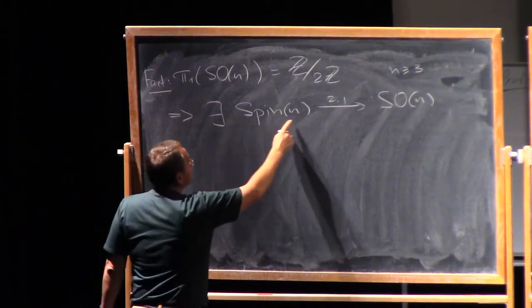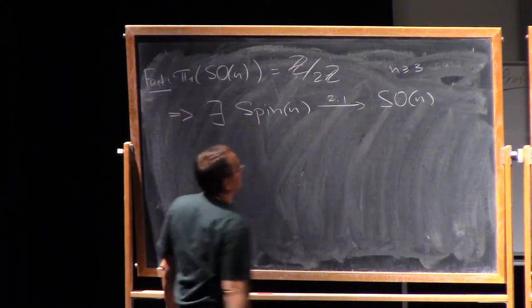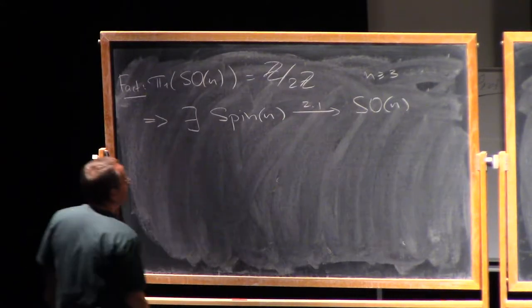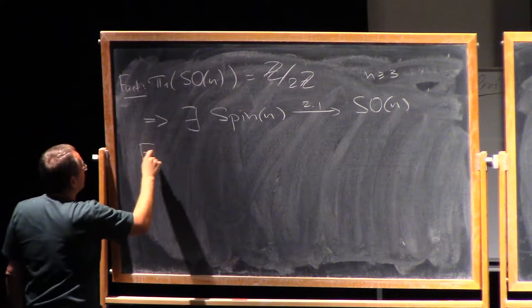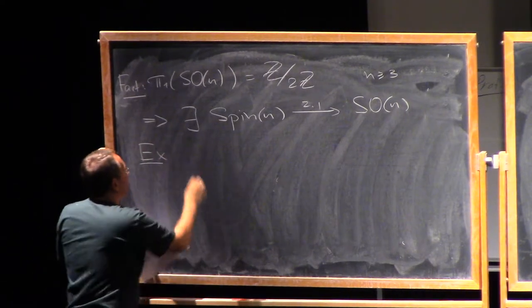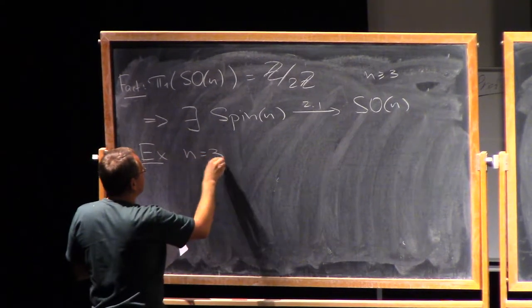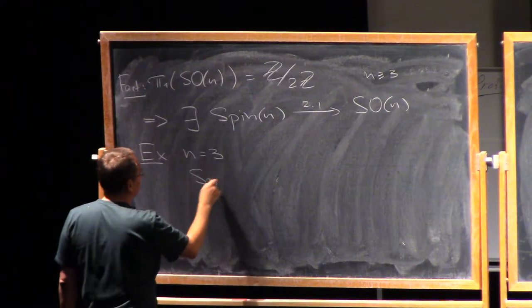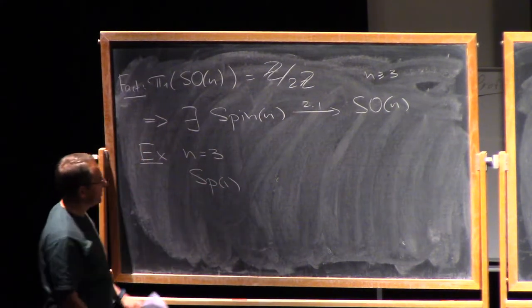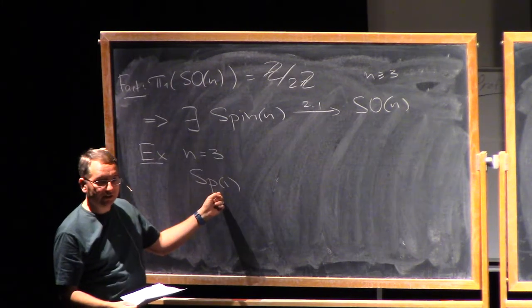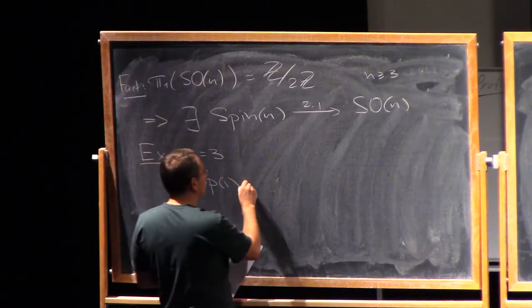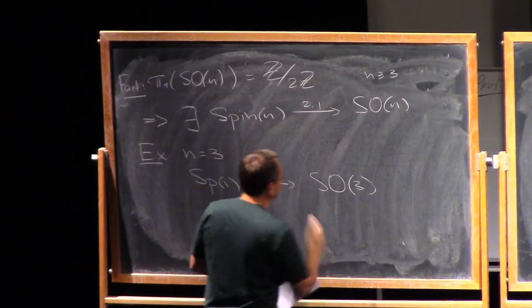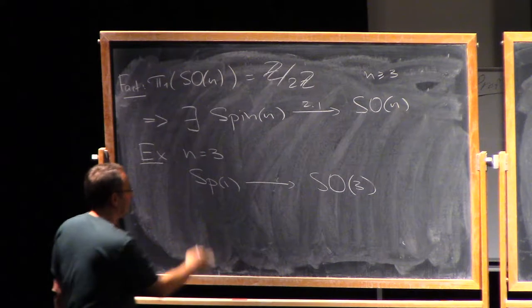In any case, and this group, spin N, is defined by this property uniquely, so if this covering is non-trivial. So, let me give you an example. Now, let us take N to be 3, right? We can consider the group SP1, which is just a group of quaternions of unit lengths. And I claim there is a homomorphism into SO3, which works as follows.